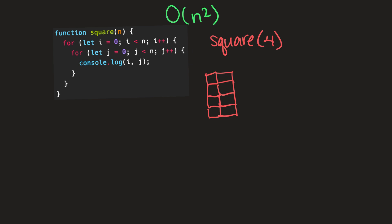Now i equals two and j equals zero — draw a square. i equals two, j equals one — draw a square. i equals two, j equals two — draw a square. i equals two, j equals three — draw a square. Then j equals four, which is our n, so we stop iterating through the nested for loop and move back up to the outer for loop.